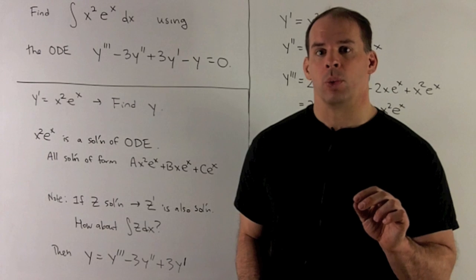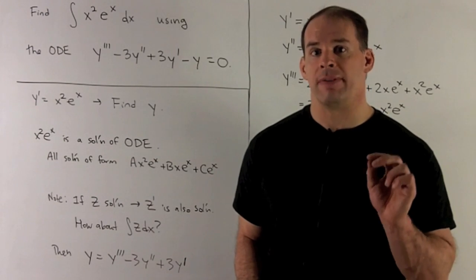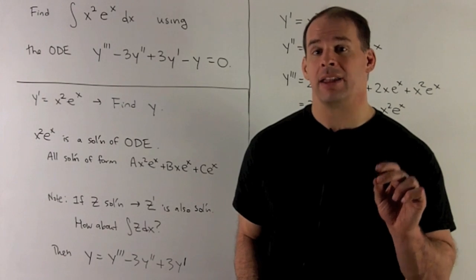What are we trying to do here? We're assuming the function x squared e to the x is the derivative of some function, and we want to find that function.